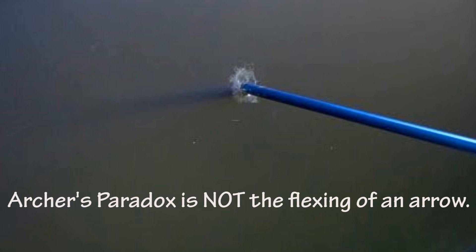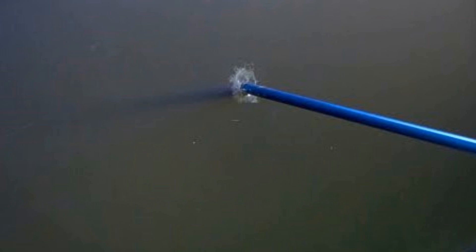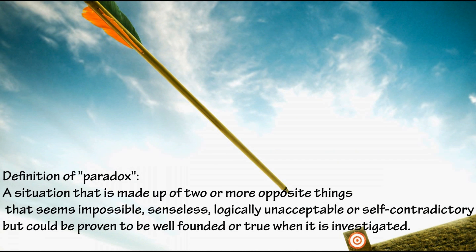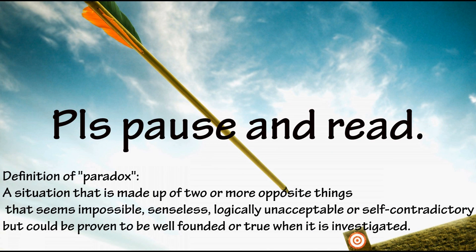Archer's Paradox is not the flexing of the arrow. Let's have a look at the definition of paradox. It is a situation that is made up of two or more opposite things that seems impossible, but could be proven to be well-founded or true when it is investigated.